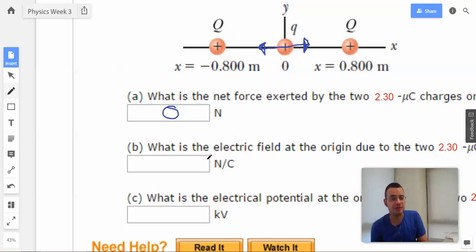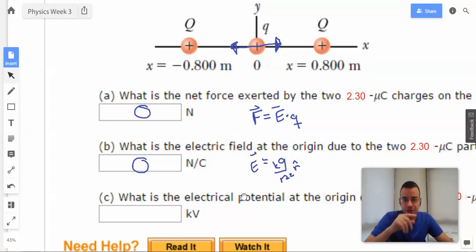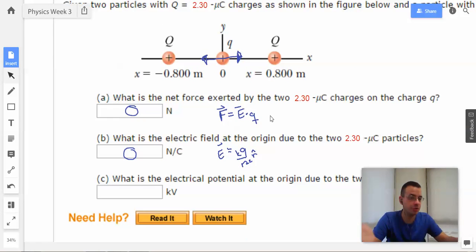What is the electric field? Electric field is also a vector. Electric fields are used to find force: F = E × Q, where E = KQ/R² R-hat. What is the electric field at the origin? They exactly cancel each other out. They're both repelling.